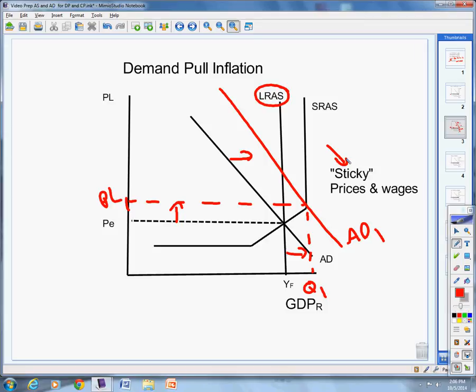Wages a lot of times are under contract or your boss doesn't give you a raise every month. They do it once a year or something like that. And so, in the short run, prices and wages are sticky. Businesses realize there's additional demand. They make additional profits.